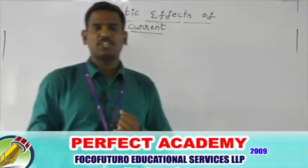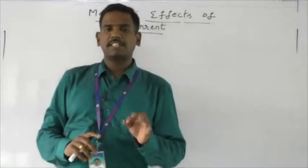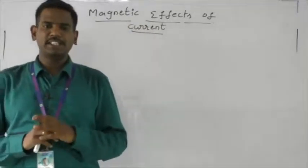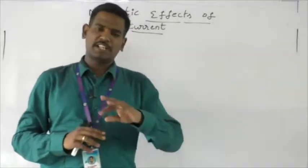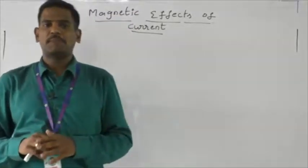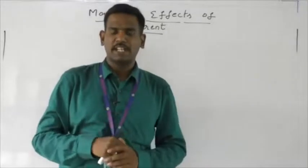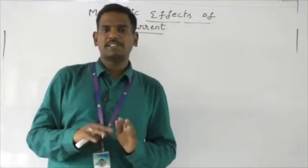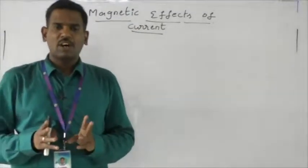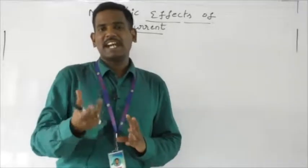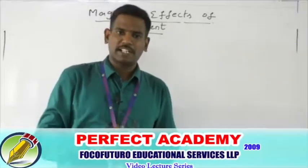One is Ampere's Circuit Law and another one is the Biot-Savart Law. Biot-Savart Law is for finding the magnetic field intensity due to any kind of conductor — it may be a straight conductor, an arc, or any kind of configuration. Ampere's Circuit Law is for finding the magnetic field intensity of any symmetric arrangement.